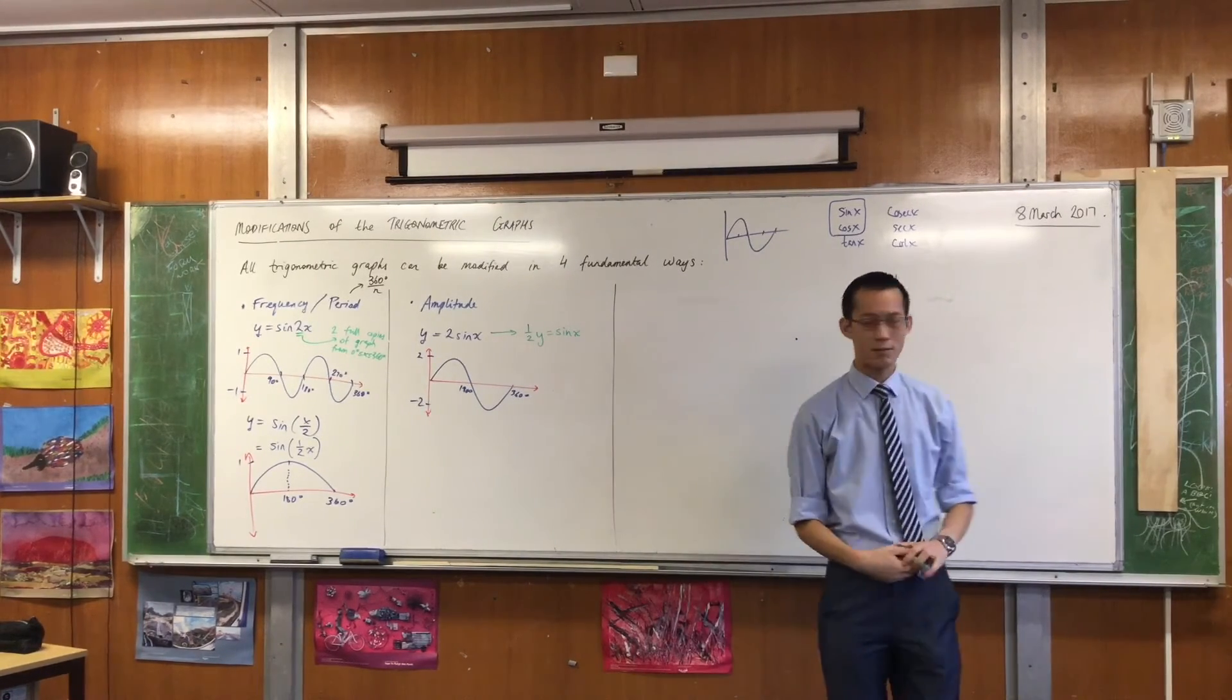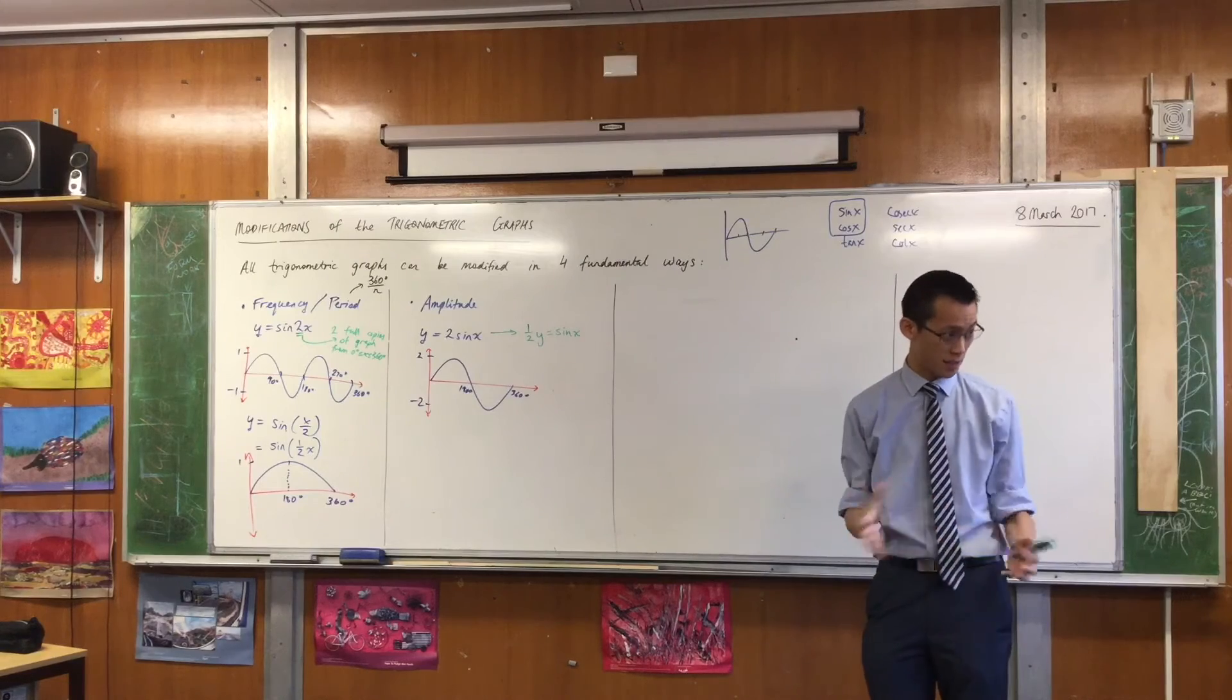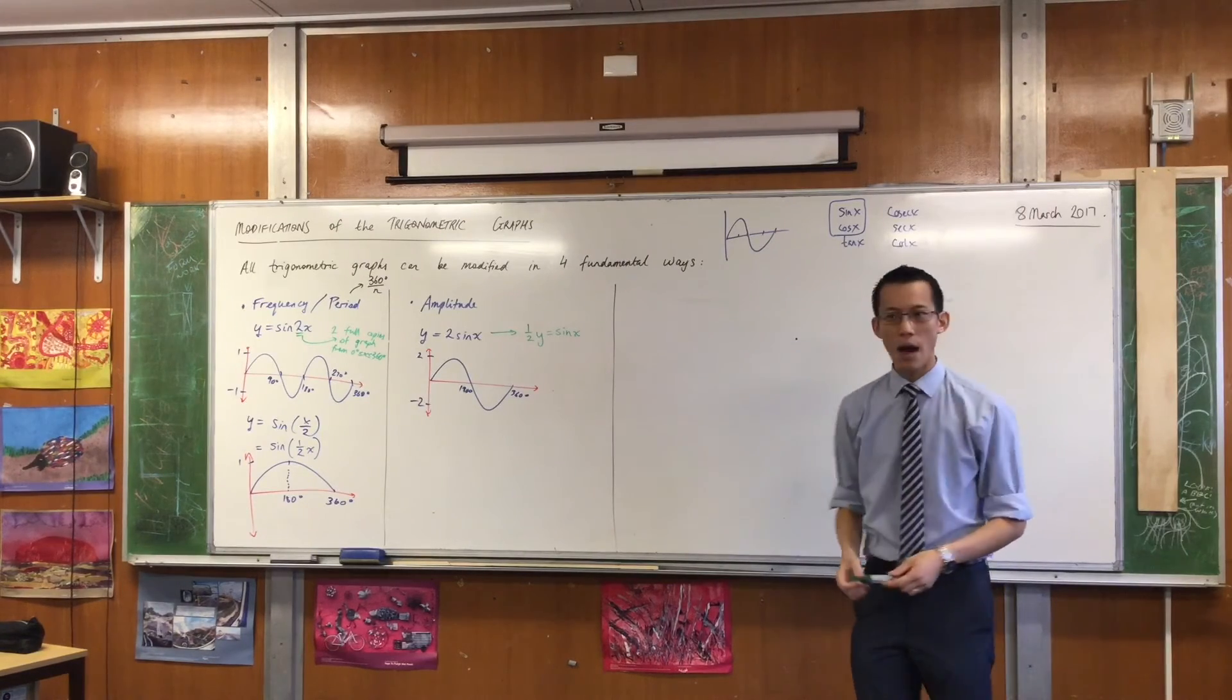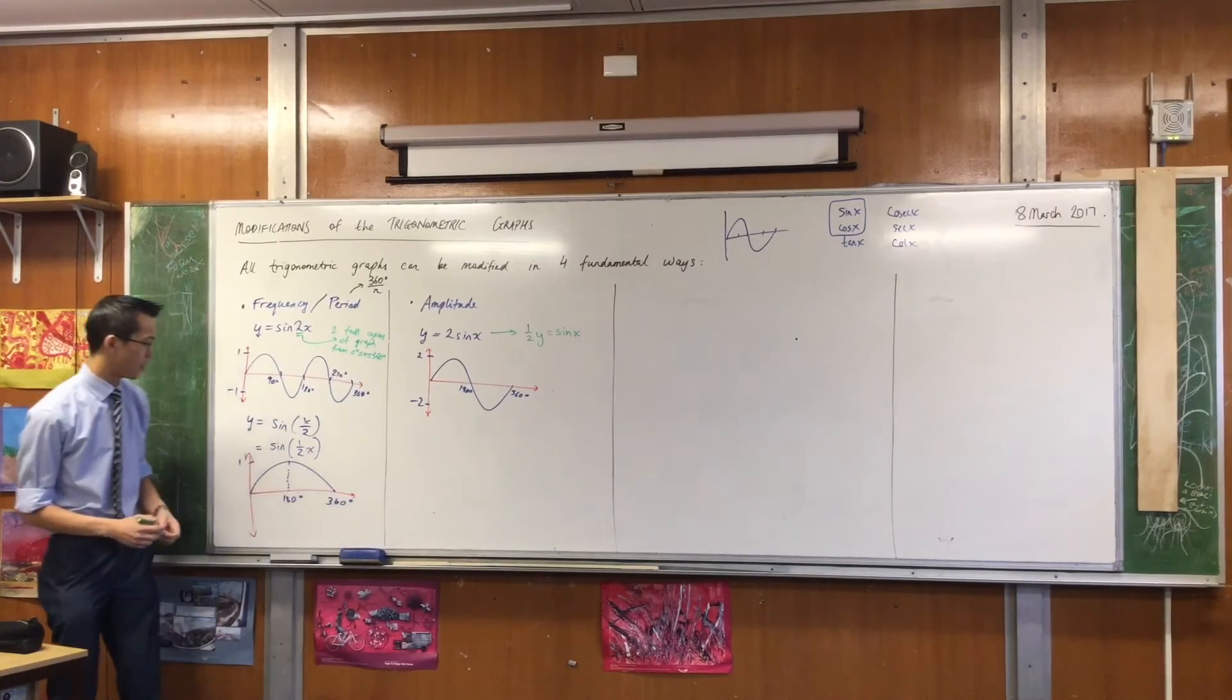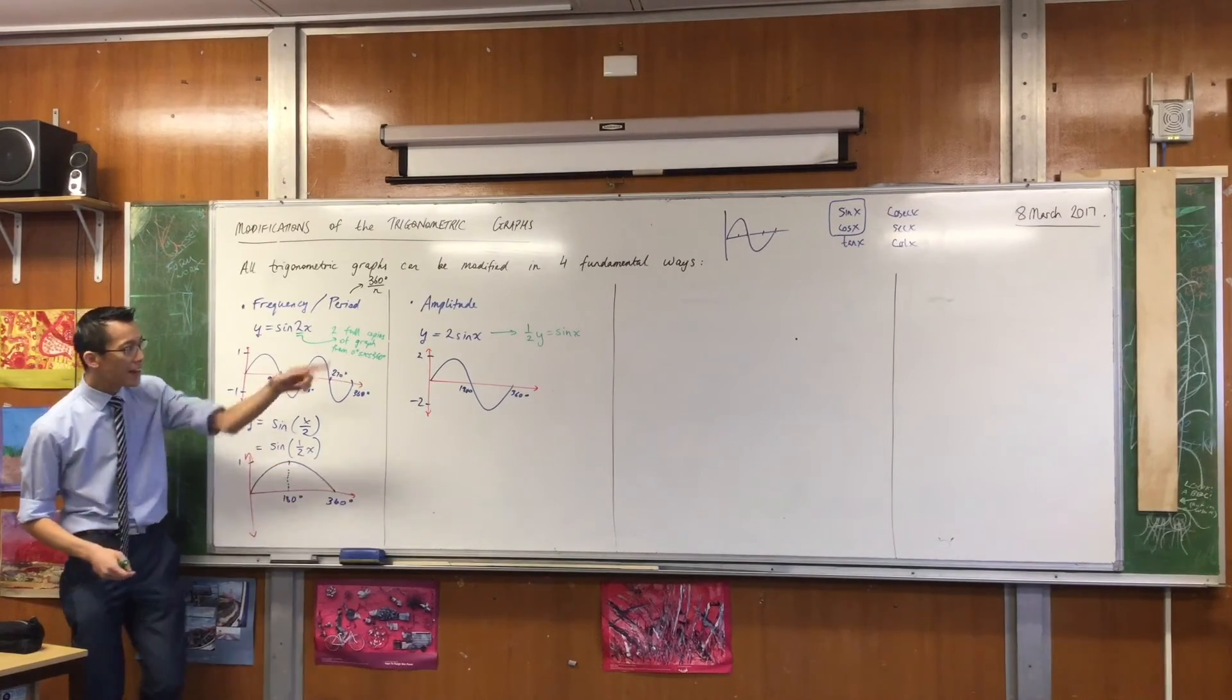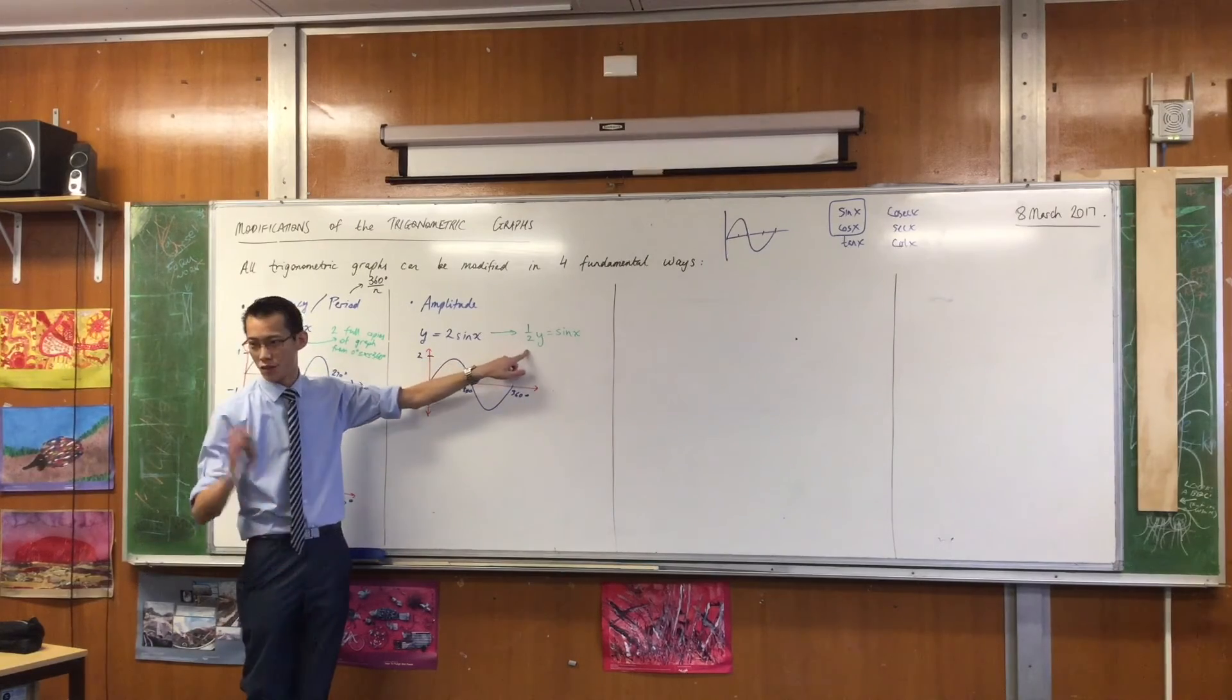Now you almost never see it like this. We tend to write things with y as the subject when you're graphing things, but I wonder if this helps you understand what is going on and how this is similar to what's happening over here. That number there, the half or the two depending on which way you look at it.